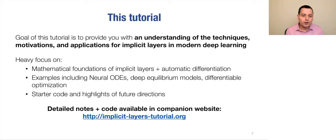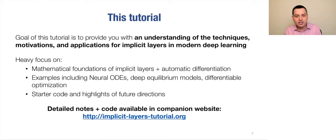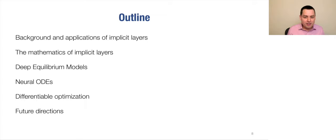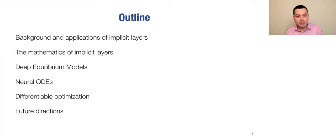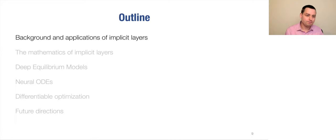One point: there's a detailed set of notes and code available at our companion website, implicitlayerstutorial.org. The outline of this tutorial is: first some background and applications of implicit layers, then the mathematics of implicit layers, then deep equilibrium models, neural ODEs, and differentiable optimization as three instantiations, and finally some future directions. I'll start with background, then David will take over to discuss additional background and applications.